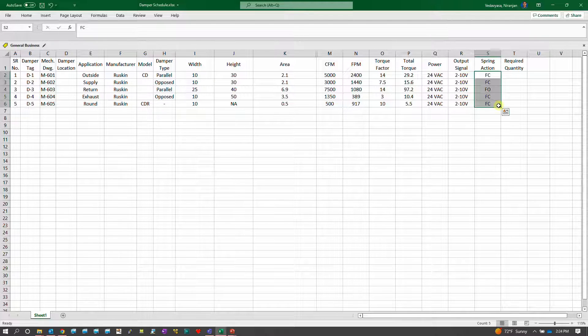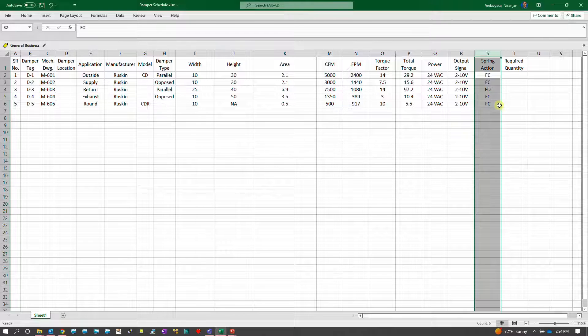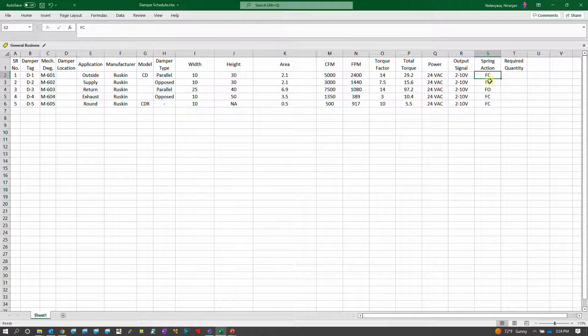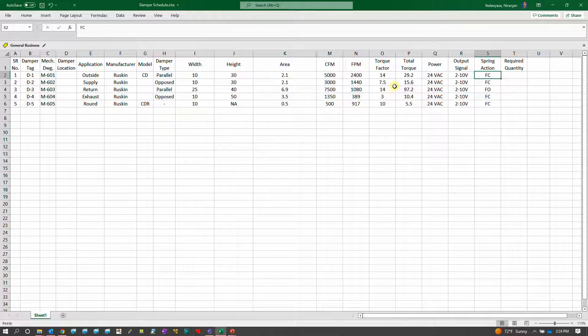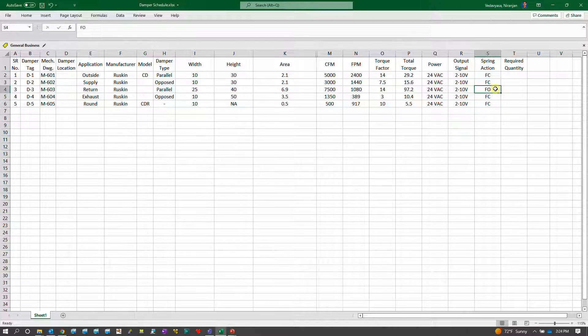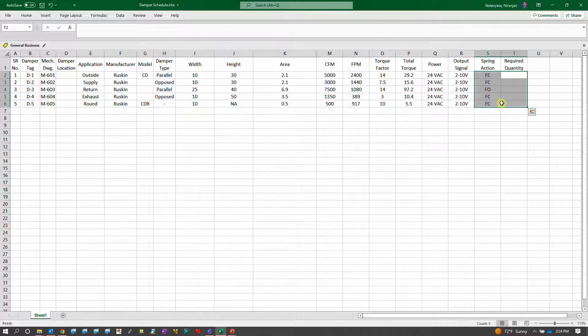The other thing which you want to see is when the power is lost, do you want your damper to fail close or fail open. Usually if it's not a critical application we do not take spring action, it is non-spring return action actuators that we will select.